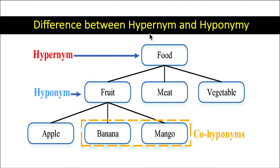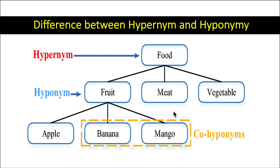Further examples of the difference between hypernym and hyponymy. Hypernym: you have food — that is the word in general. We come down to more specific words: fruit, meat, vegetable. Further, fruit — as co-hyponyms — can have banana, mango, apple. Likewise, co-hyponyms of meat can include beef or chicken.